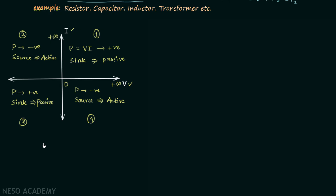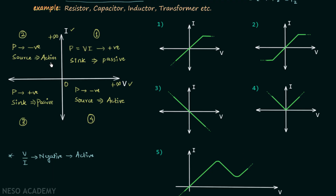We can conclude that whenever the ratio V/I is negative at any point on the characteristics curve, the element is an active element; otherwise it is a passive element. In the first example, the VI characteristics curve lies in the first and third quadrants — in both quadrants the element is passive — so this is the curve of a passive element.